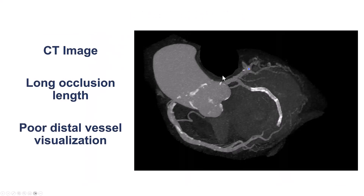The coronary CT angiogram can be very useful, especially in cases of poor visualization distally. Here we see something in the obtuse marginal territory, but the visualization remains fairly poor. We do see that there is a long stent length and long occlusion length.